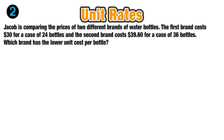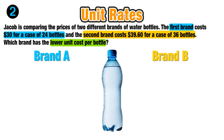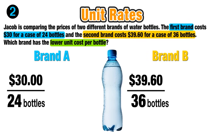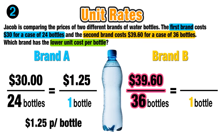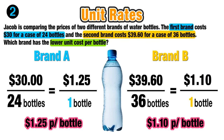Now let's look at one more example where Jacob is comparing prices of two brands of water bottles. Brand A costs $30 for a case of 24 bottles, and Brand B costs $39.60 for a case of 36 bottles. We want to find which brand has the lower unit cost per bottle. For Brand A, $30 divided by 24 equals $1.25 per bottle. For Brand B, $39.60 divided by 36 equals $1.10 per bottle.